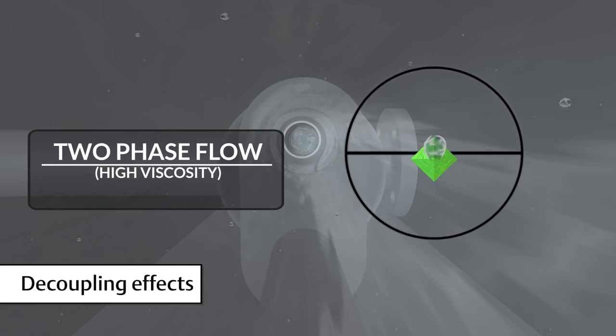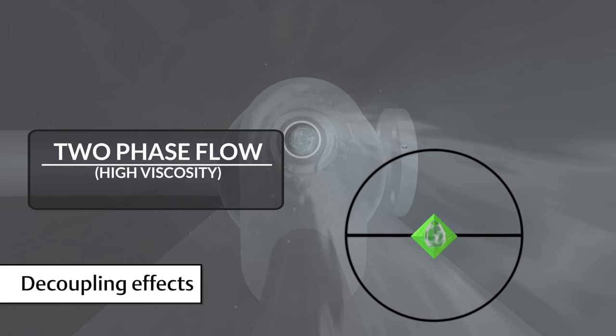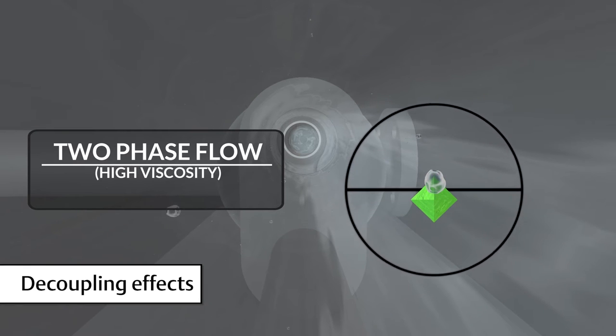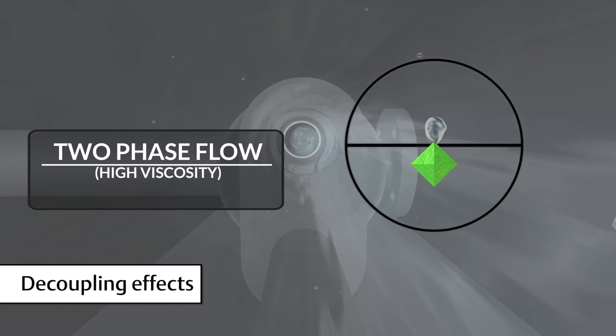However, in the case of two phase flow, the bubble can move separately from the liquid, which ultimately causes the center of gravity to move separately from the flow tube center of gravity.